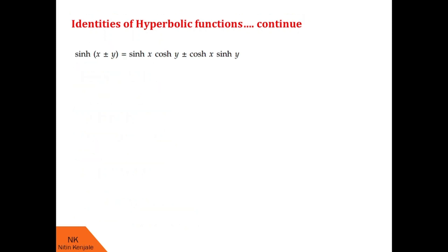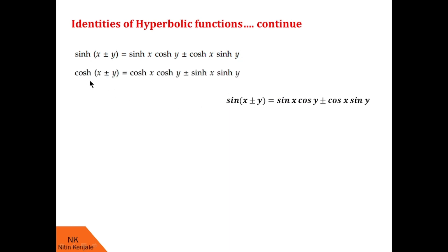A few more identities: sinh(x ± y) equals sinh x·cosh y ± cosh x·sinh y — exactly similar to the circular function identity sin(x ± y) equals sin x·cos y ± cos x·sin y. For cosh(x ± y), you have cosh x·cosh y ± sinh x·sinh y. Note that when you have a plus sign, you also have a plus sign on the right, and for minus, minus. But in circular functions the signs are vice versa — plus here gives minus there.